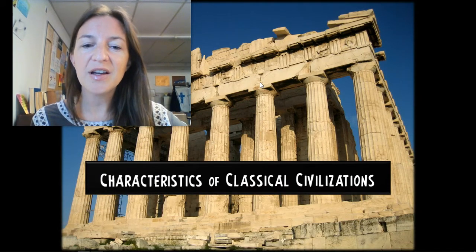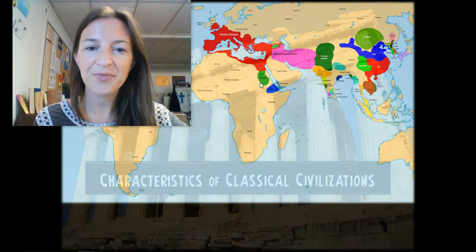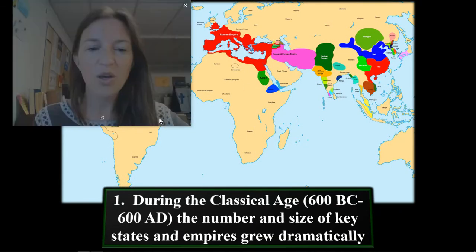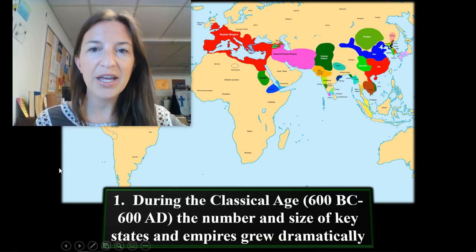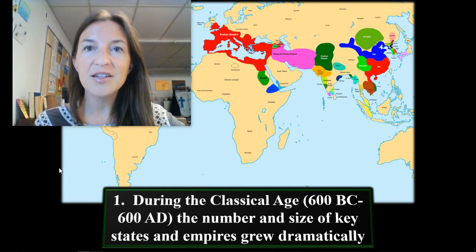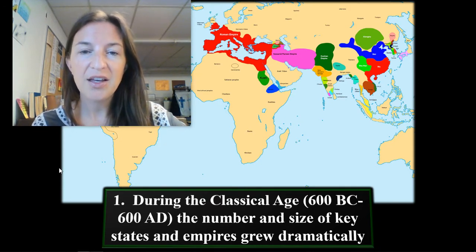What characteristics do classical civilizations share? The classical age is largely considered 600 BC to 600 AD, and the number and size of key states and empires grows dramatically.